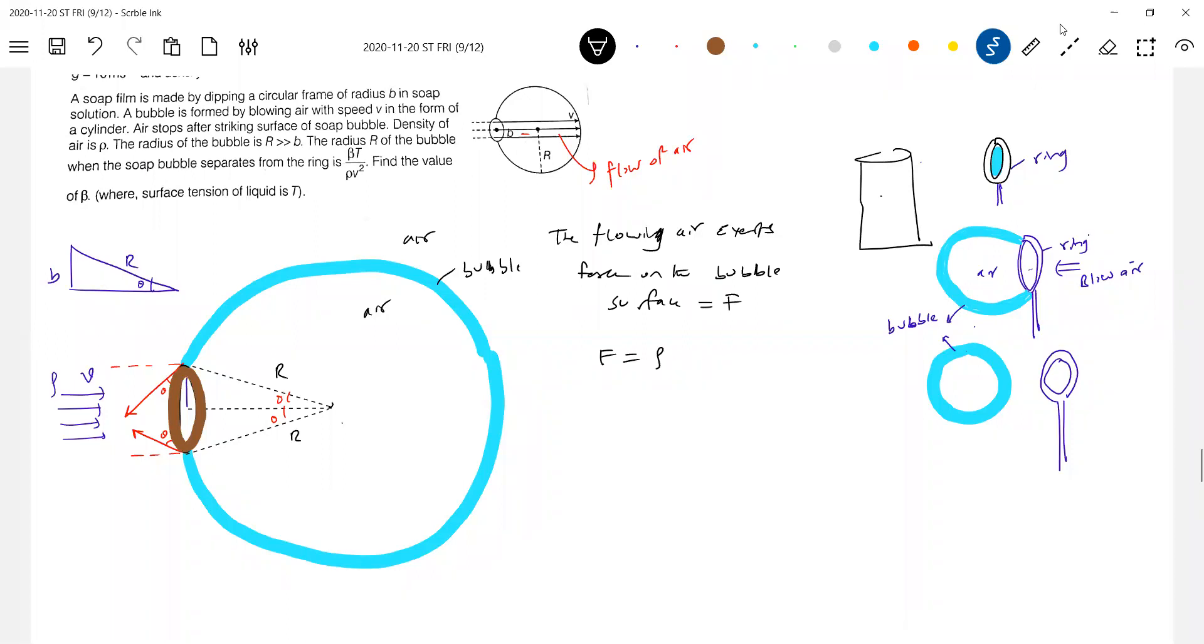So this F we'll write it. How much? Rho into, what is the area? Pi B squared into V. Into V squared, sorry. What is V? V is the speed of the air. Okay. This is, I think, rho S V square, S is what? Area of cross-section. Here area of cross-section of ring, it will become different. So who should balance this particular force? Force due to surface tension.